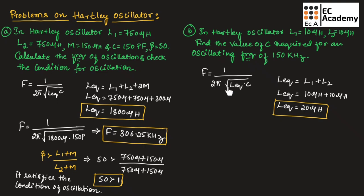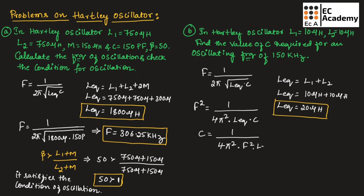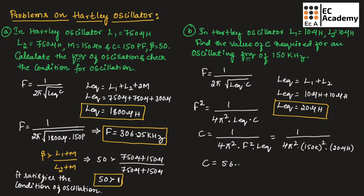Since C is inside the square root, let us square both LHS and RHS. We get F² = 1 / (4π² × L_eq × C). From this, C = 1 / (4π² × F² × L_eq). Substituting the values, C = 1 / (4π² × (150 kHz)² × 20 µH). The value of capacitor will be equal to 56.28 nanofarad.